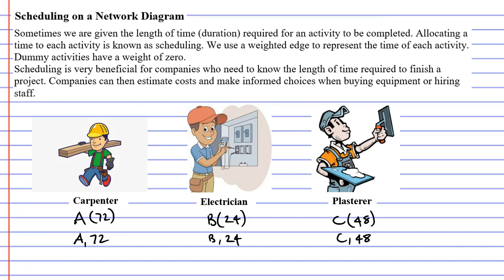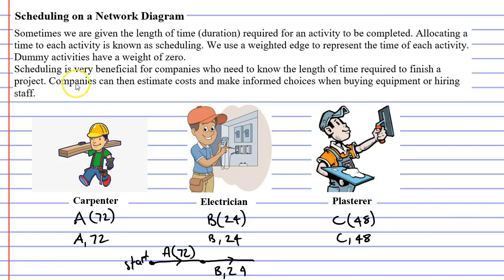We'll call that Activity C, and it's going to take 48 hours to complete. So what does scheduling look like on a network diagram? We start with a start vertex, and then edge A comes out from that — so we could have A with the number 72 in brackets, or as A comma 72. The number 72 represents the weight of the edge. Once Activity A is complete, we move to Activity B (B, 24), then Activity C (48 hours), and then we finish our project.